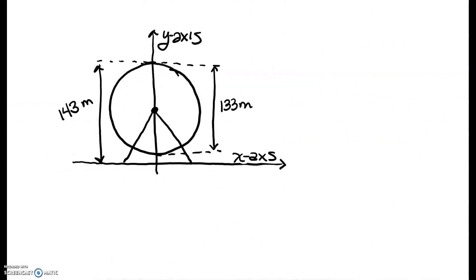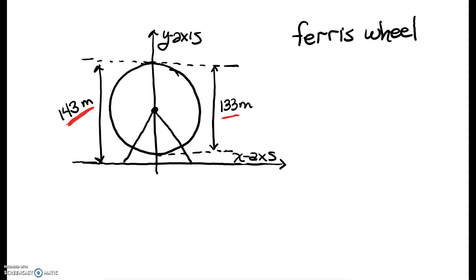Let's say we're talking about a ferris wheel — here's a picture of one. You're given that from the very top of the ferris wheel all the way down to the ground is 143 meters, and from the very top to the very bottom of the ferris wheel is 133 meters. I drew a set of axes: the x-axis represents the ground, and the y-axis goes through the center of the ferris wheel. These struts keep the ferris wheel in place.